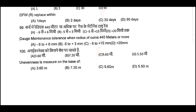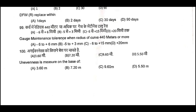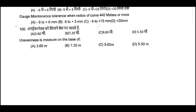Q99: Gauge maintenance tolerance. When radius of curve is 440 meters or more, the tolerance is minus 5 to plus 3 mm. Q99, B is the correct answer: minus 5 to plus 3 mm. Question Number 100: Unevenness is measured on the base of a 3.6 meter chord. Q100, A is the correct answer: 3.6 meters.